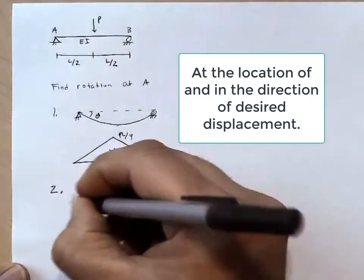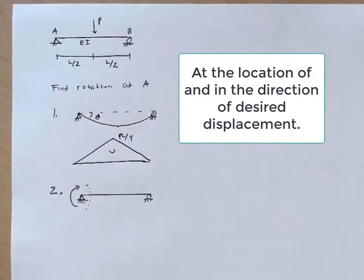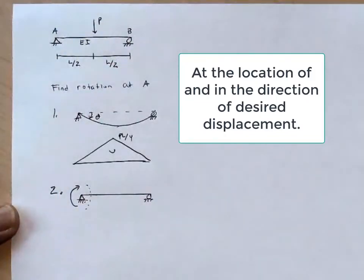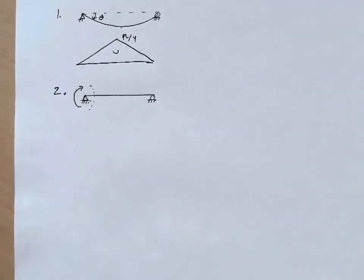And so we're going to apply a moment at the left end or a rotational force at the left end. How did I decide to draw it clockwise versus counterclockwise? Well, I'm following the same direction as the actual rotation. This is where it helped me out a little bit to draw the deformed shape. So now that I know that when I get an answer, that answer should be positive and it will correspond to the actual direction of rotation.